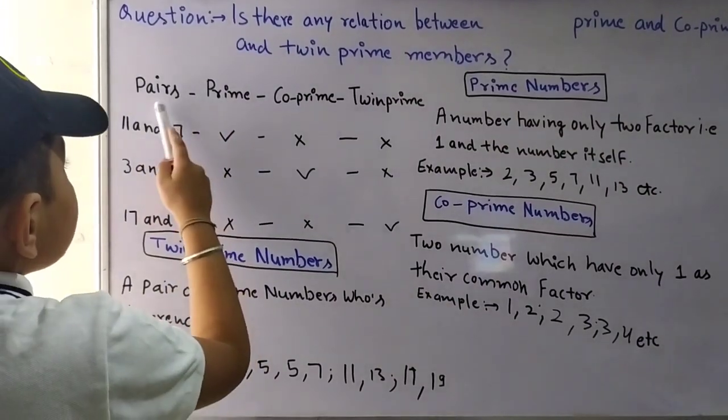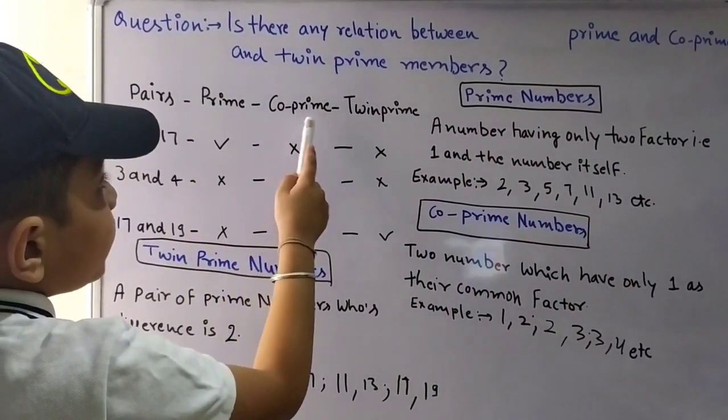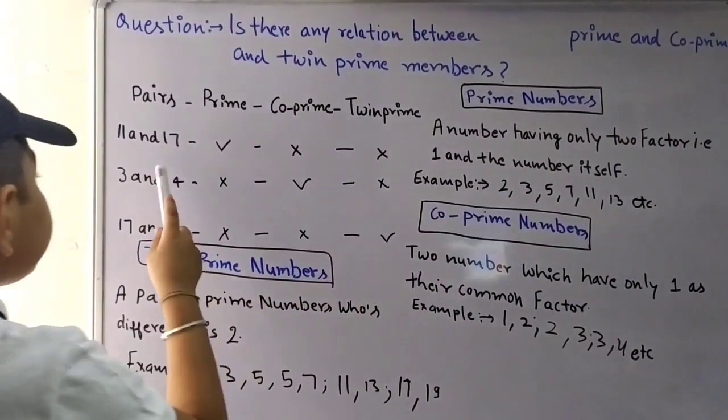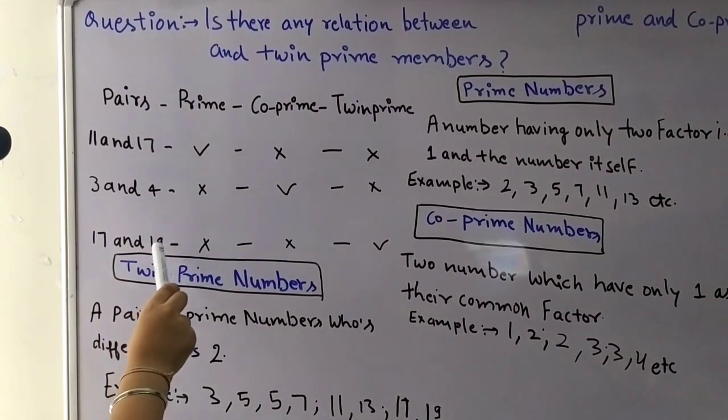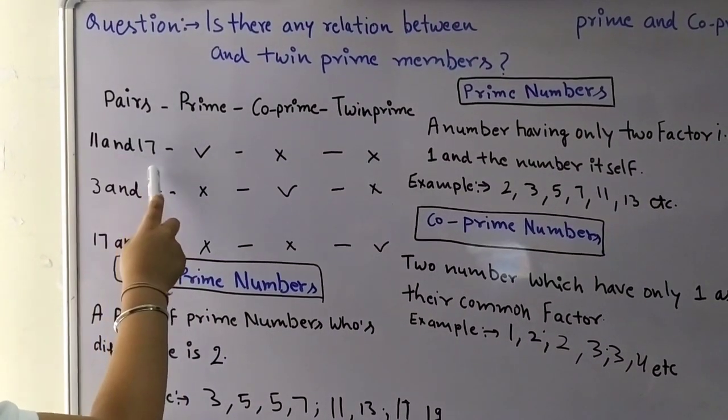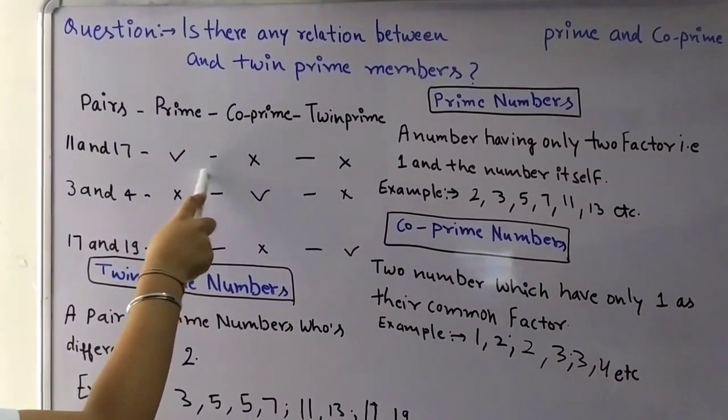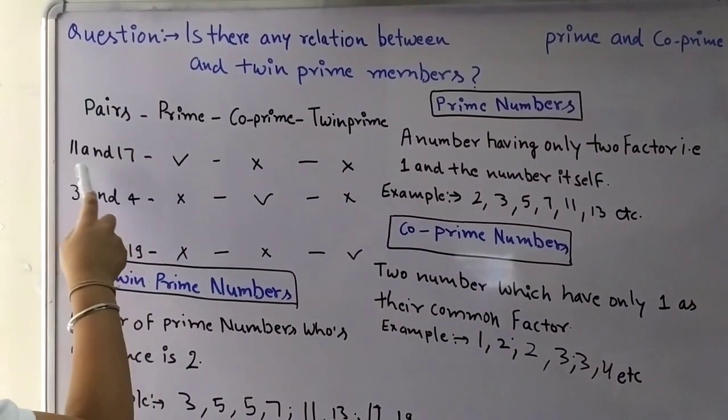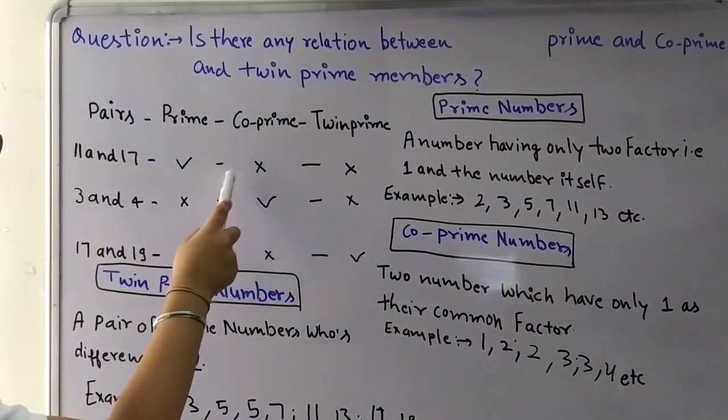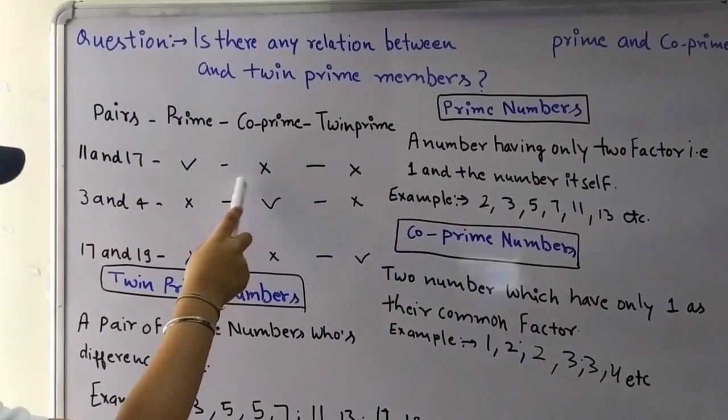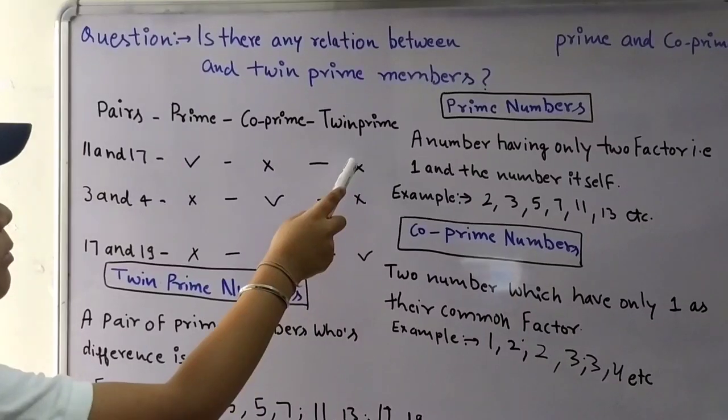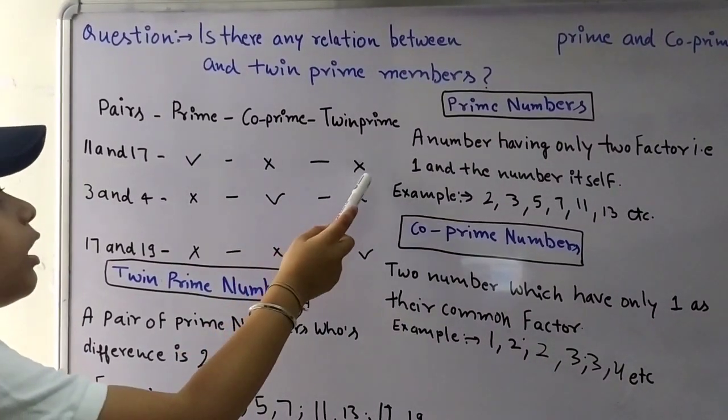Pairs. Prime, co-prime, and twin prime. 3 and 4, 17 and 19, 11 and 17. In co-prime, 11 and 17 are not correct. And in twin prime, 11 and 17 are correct.